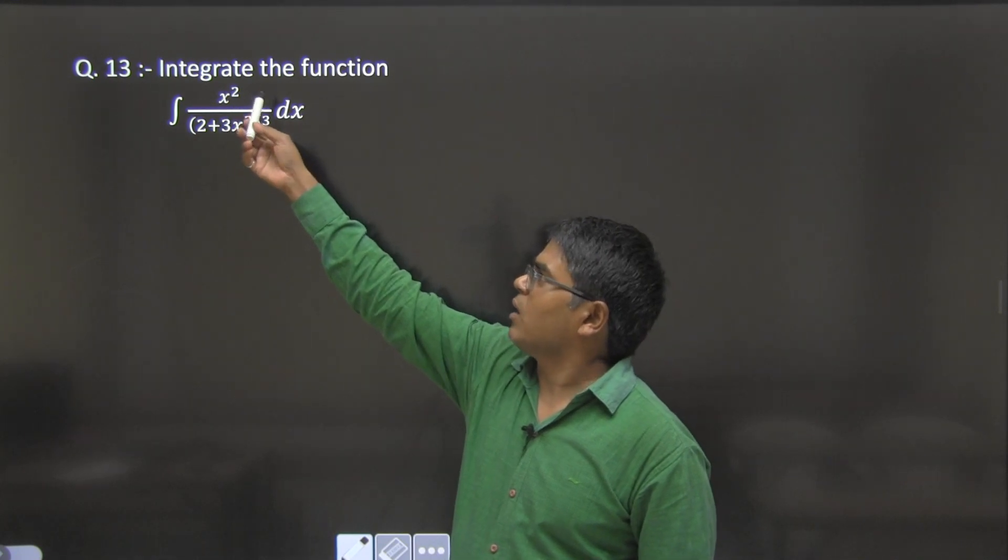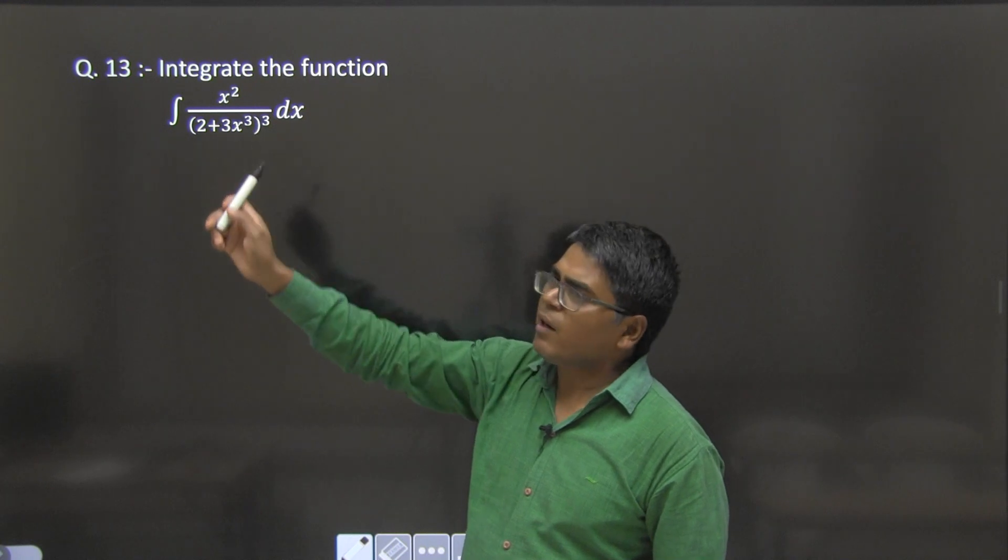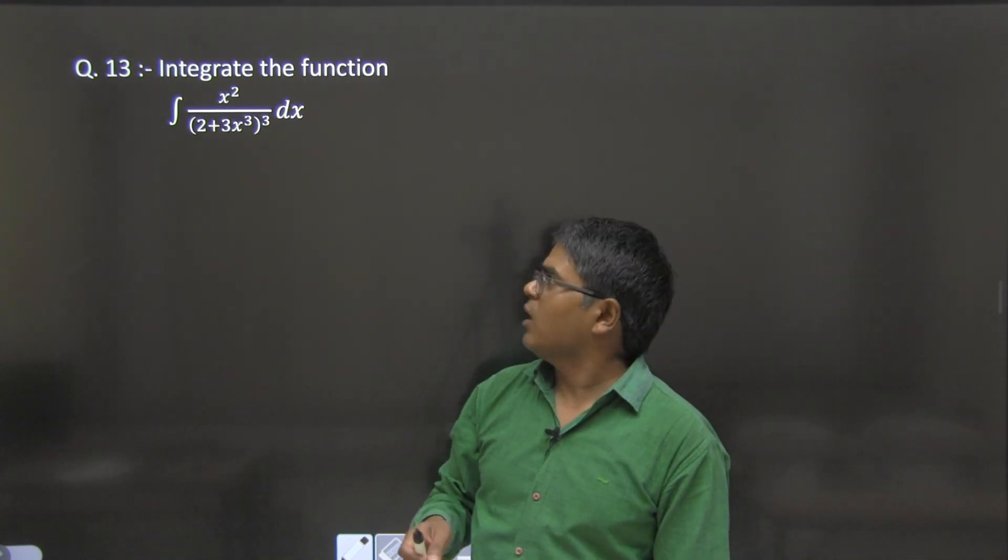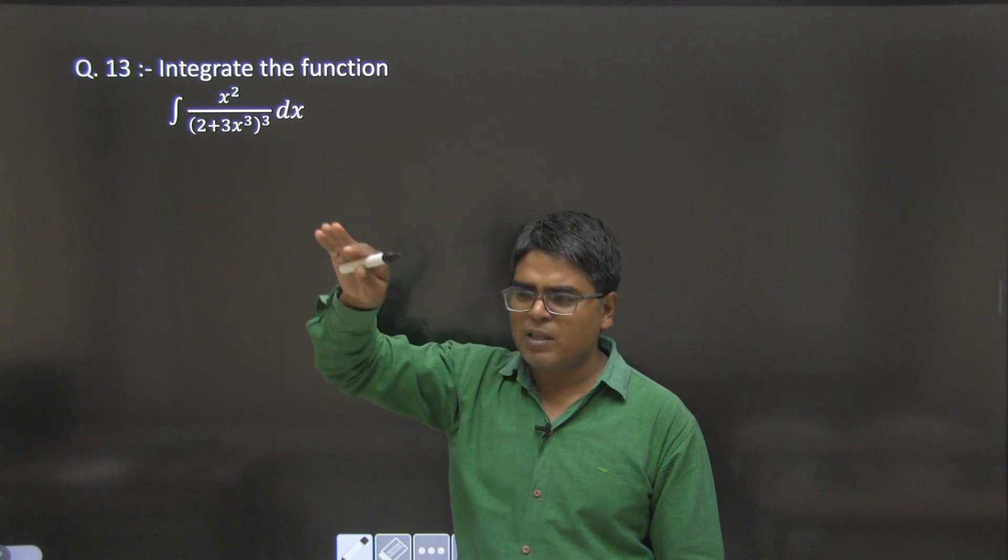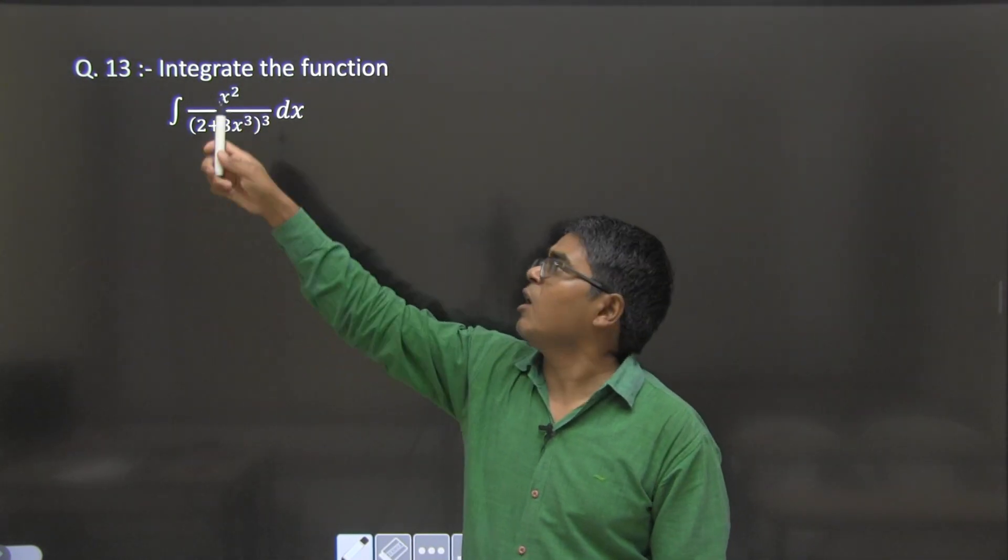Let's look at the denominator and numerator. The denominator has (2 + 3x³) to the whole power 3, and the numerator has x². If we assume the expression inside the bracket in the denominator as t, then its derivative is in the numerator - the constant part aside, x³'s derivative is x², which is written in the numerator.